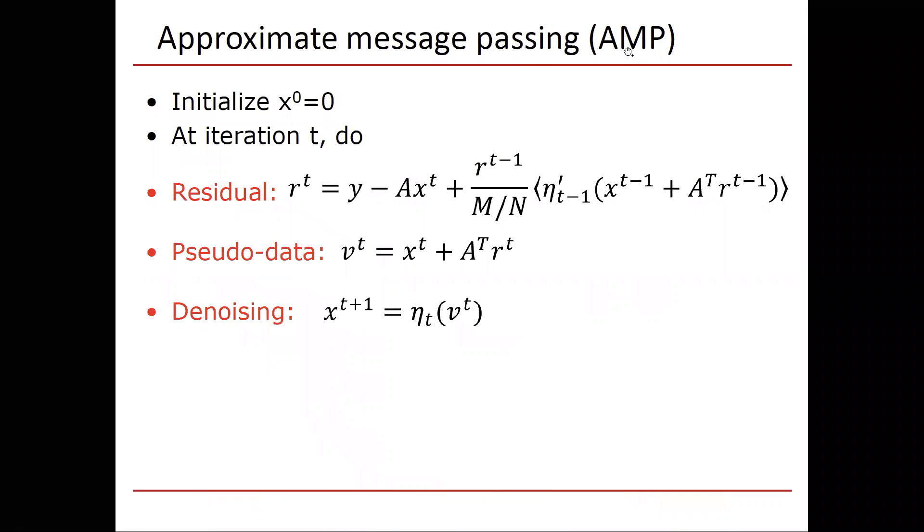So how does the algorithm actually work? We begin by initializing an estimate of the signal x superscript zero. It's an all zeros vector. And at iteration t, at every iteration, this is an iterative algorithm we proceed as follows, where x zero is a kind of a silly estimate, a zero initialization. So three steps.